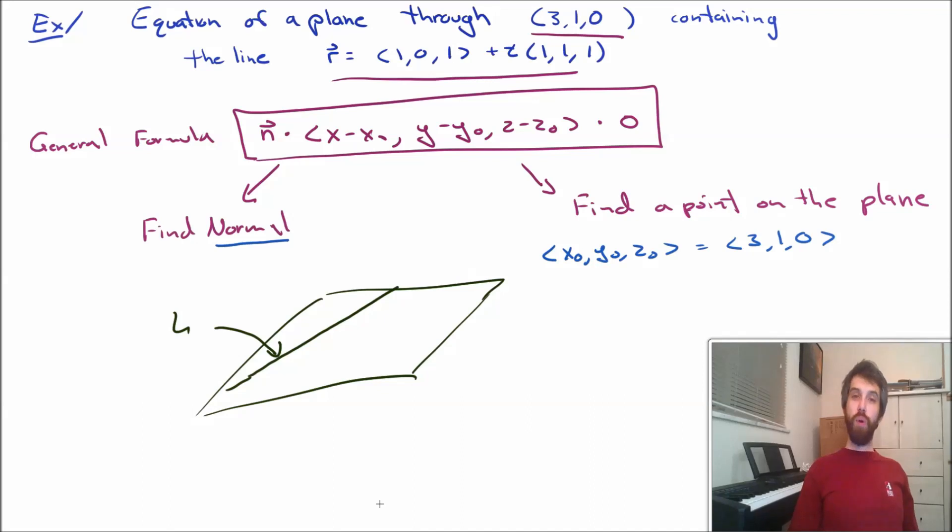We're also claiming that we have some other point, that's this one over here, that's my 3, 1, 0. So I've got this point that's on the plane and I've got this line that's in the plane. And what my goal is, is to be able to figure out a normal vector. I want to be able to figure out what this normal vector is that is orthogonal to every vector that lies in the plane.